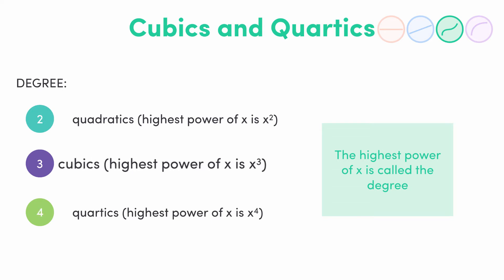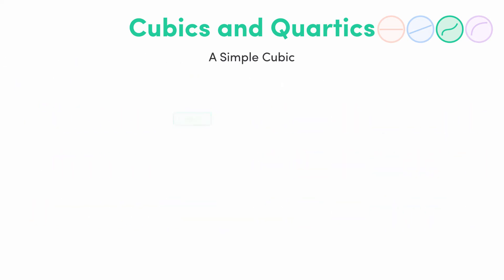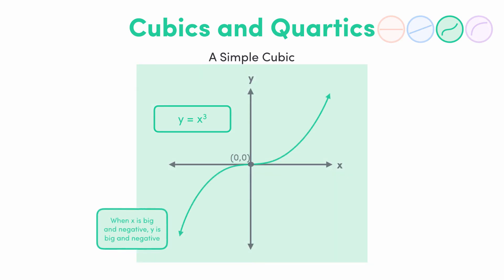Today we'll be learning to sketch a simple cubic and a simple quartic. The simplest cubic is just y equals x cubed, which looks like this, and intercepts the x and y axis at 0, 0. When x is very big and negative, then y is also very big and negative, because cubing a negative number gives you a negative number. And when x is very big and positive, then y is also very big and positive, because cubing a positive number gives you a positive number.